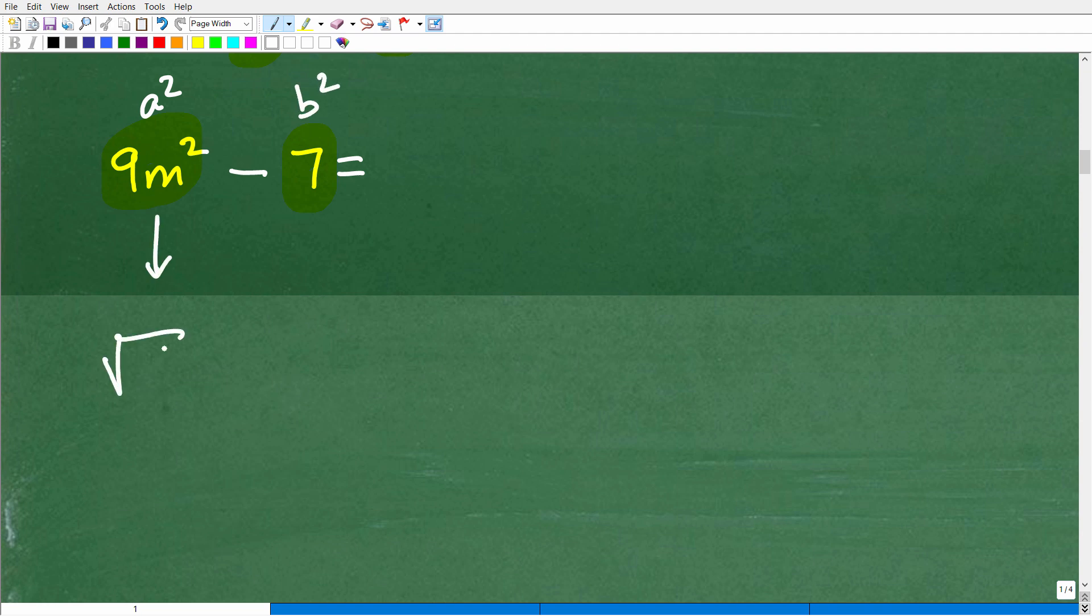So to get our a, we're going to take the square root of 9m squared, which, of course, is going to be what? 3m. But to get our b, you might be saying, well, I can't take the square root of 7. Well, of course you can. We'll just write it as the square root of 7. Okay, so we'll just write the answer as the square root of 7. So let's go ahead and follow the pattern. a plus b times a minus b.